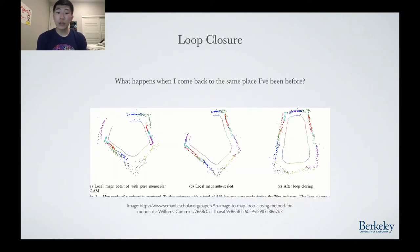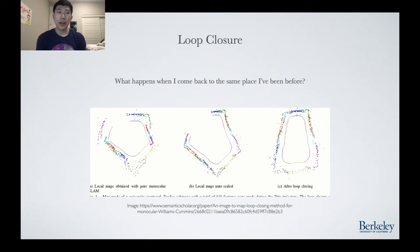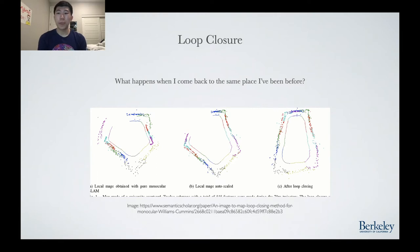Another key part of SLAM is loop closure. Loop closure seeks to answer the question: what happens when I come back to the same place I've been before? Imagine walking around a building. You start on the northwest corner and slowly work your way around it. Once you've finished a circle, you come back to where you began. However, due to SLAM drift, which is inevitable due to noise, we find that our estimated trajectory takes us to a position different from our starting position. Loop closure refers to the algorithms that detect coming back to the same place, as well as being responsible for optimizing the camera's trajectory such that the current camera pose realigns with our starting position.